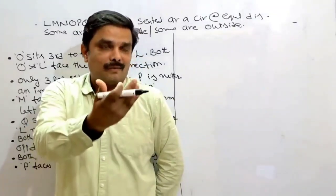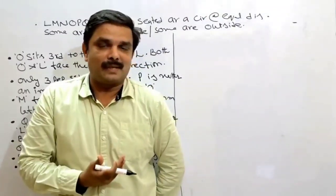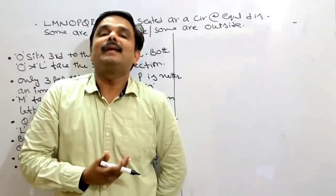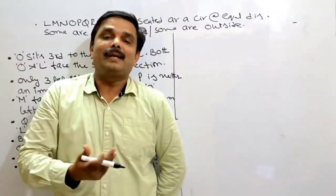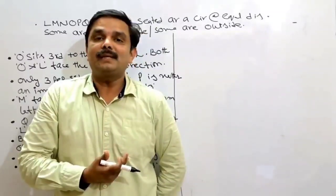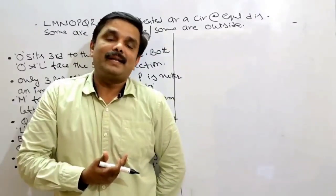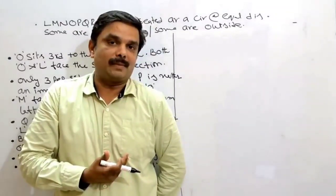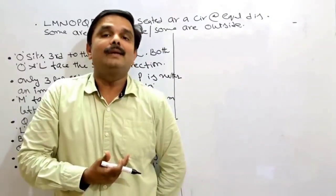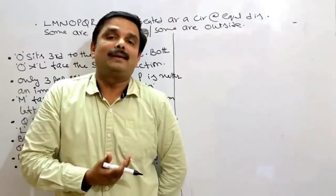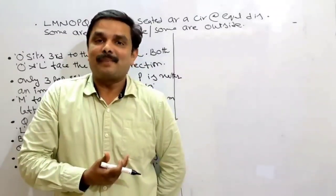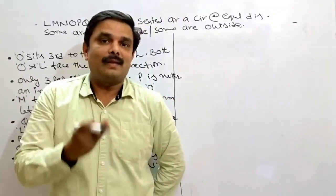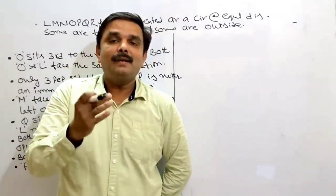Very recently in competitive exams they are asking questions like this: suppose eight persons are seated around a circular table, some are facing inside, some are facing outside, and they give eight different professions for eight people, and also the relationships among those eight people. So to solve this type of puzzle you need to be thorough with seating arrangement, puzzle test, and blood relations.